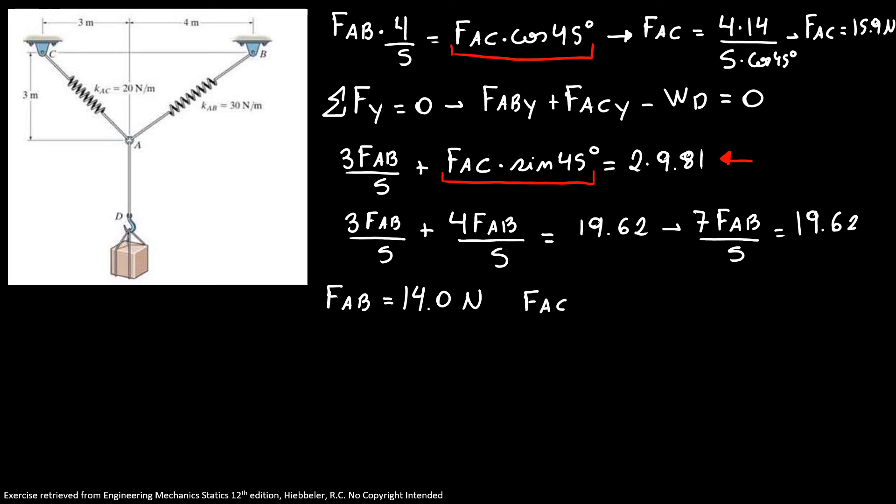Now we're going to use the concept of our spring force. Our spring force says that our spring force is K times X and this X means the elongation of our spring. So to discover our stretch for A and B, I can use FAB equals KAB times XAB.